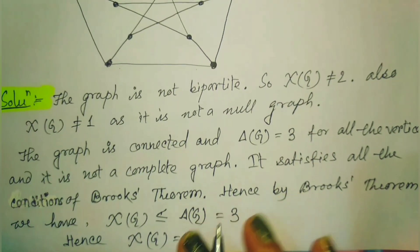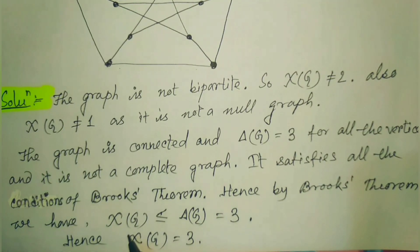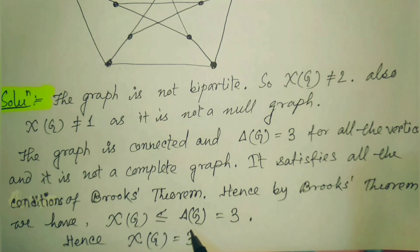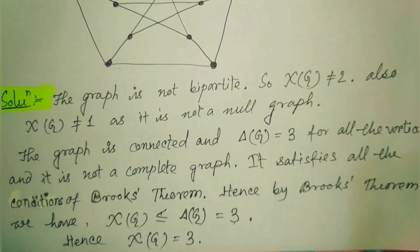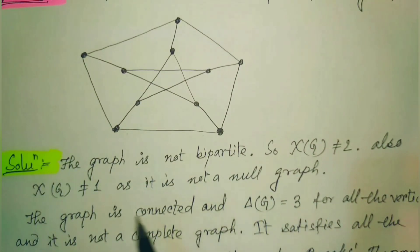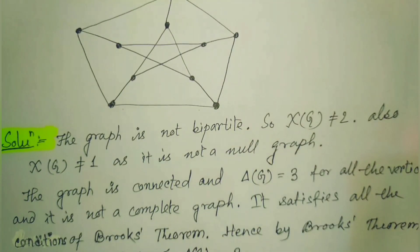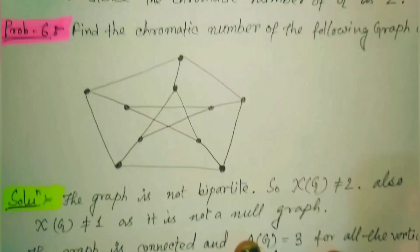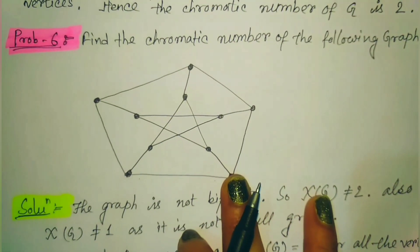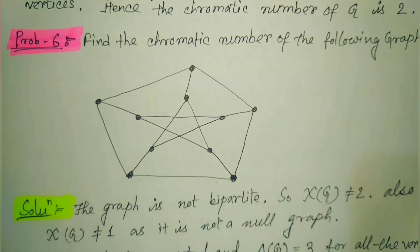So the chromatic number is less than or equal to 3. Since it is not 1, not 2, and not more than 3, it is definitely 3. The chromatic number for this graph is 3.